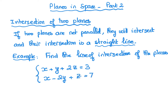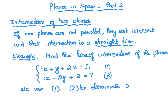We consider these as two equations, 1 and 2, and perform equation 1 minus equation 2 to eliminate the variable x. We end up with 3y plus z equal to minus 4. From here, we can get z as a function of y: z equals minus 3y minus 4.